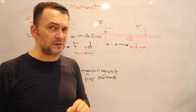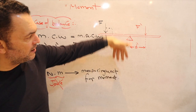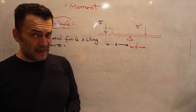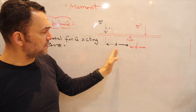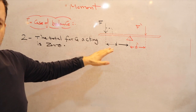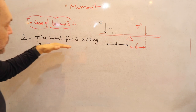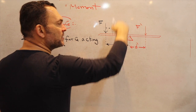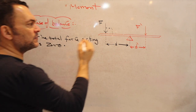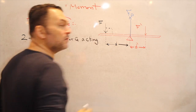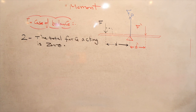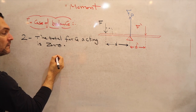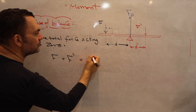In Condition number two, we speak about the linear direction of forces. The total force acting down should equal the total force acting up to keep the system in balance. Looking at the same system, the two forces F and F dash both act downward, so there must be another force holding them up. This force is Fp — the force done by the pivot. Therefore: F plus F dash equals Fp.